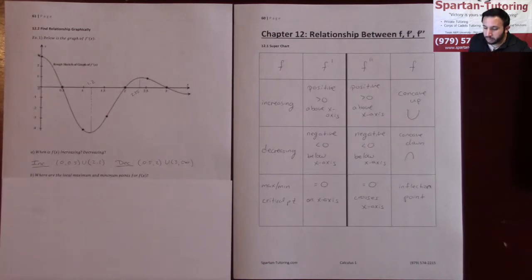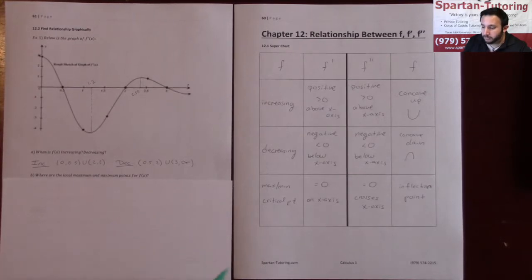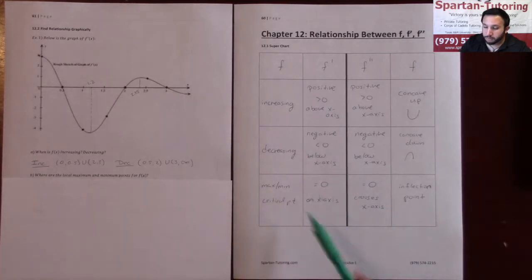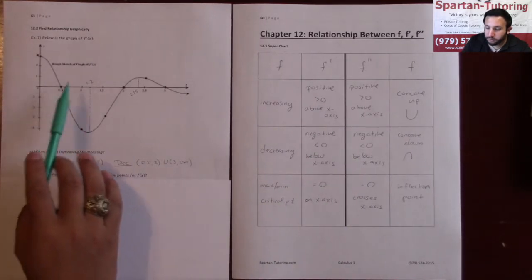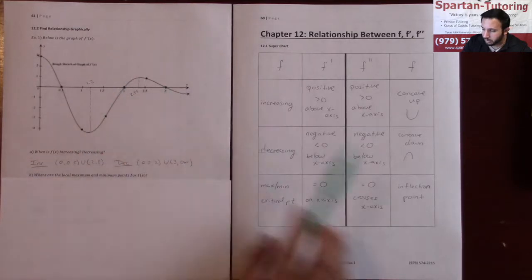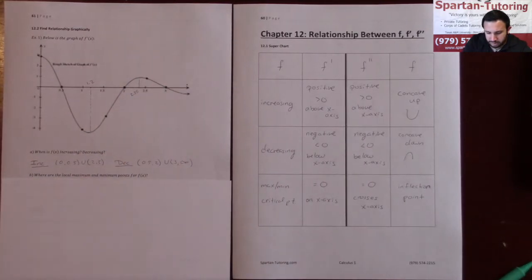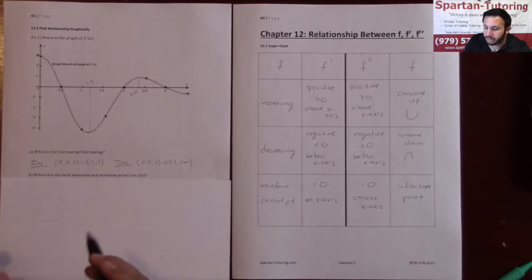Let's take a look at another question. Where are the local maximum and minimum points for f of x? I have a local max or min whenever f prime crosses the x-axis, so it's going to occur either here at 0.5, 2, and 3. Now what I like to do is, now that I know when I'm increasing and decreasing, you can kind of sketch out this function.